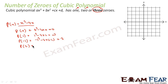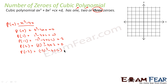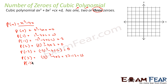p(2) = 2³ - 4×2 = 8 - 8 = 0. p(-2) = (-2)³ - 4×(-2) = -8 + 8 = 0. We can also take p(-3), which comes out to be (-3)³ - 4×(-3) = -27 + 12 = -15.